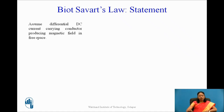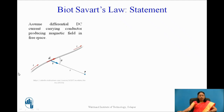Before the statement, we need to assume: assume a differential DC current carrying conductor producing a magnetic field in free space. This is a current carrying conductor carrying current I, placed in free space. A small length of this conductor is considered, having length dL, and as it has a direction in the direction of the current, the length is called dL bar.